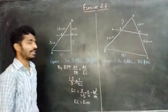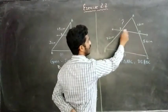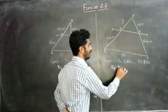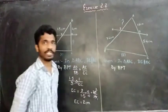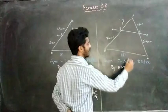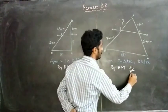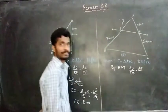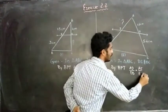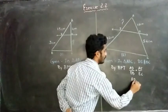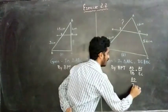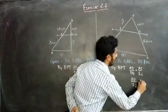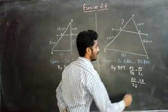Similarly, in the second diagram also, in triangle ABC, DE is parallel to BC. Again use BPT. By BPT we will get AD by DB equal to AE by EC. Substitute the values: AD we don't know, DB is 7.2, AE is 1.8, EC is 5.4.